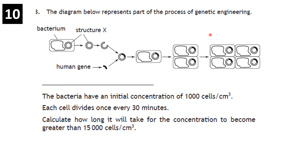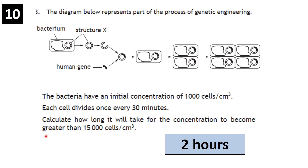Question on bacterial cell division: initial concentration is 1000 cells per cm³, each cell divides every 30 minutes — how long until concentration exceeds 15,000 cells per cm³? Doubling: 1000 → 2000 (30 min) → 4000 (60 min) → 8000 (90 min) → 16,000 (120 min). The answer is 2 hours or 120 minutes.